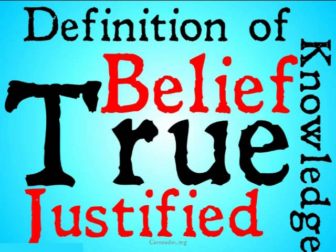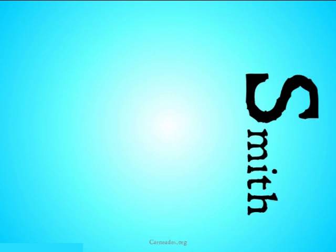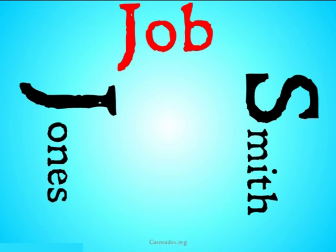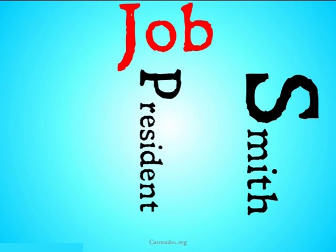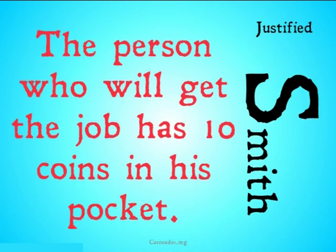What Gettier is going to need to provide is an example of a case in which you have justified true belief, but it's not knowledge. Let's take a look at his thought experiment. Imagine that you have Smith and Jones, two roommates who are applying for a job. Smith watches Jones leave the house with exactly 10 coins in his pocket. Later that day, the president of the company drops by and tells Smith that Jones is going to get the job. From this information, Smith concludes that the person who will get the job has 10 coins in his pocket. It's justified in a non-skeptical sense because the president told Smith that this is in fact the case, and he saw Jones put 10 coins in his pocket.